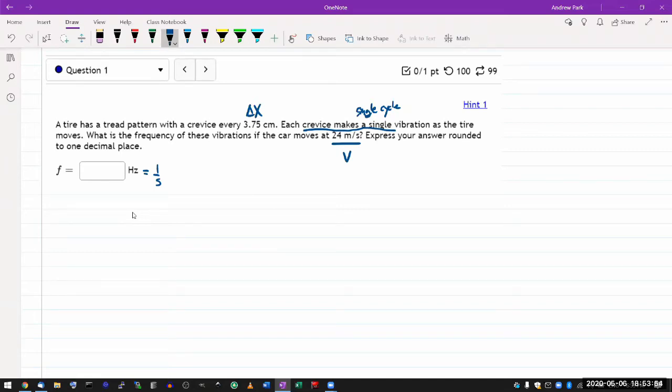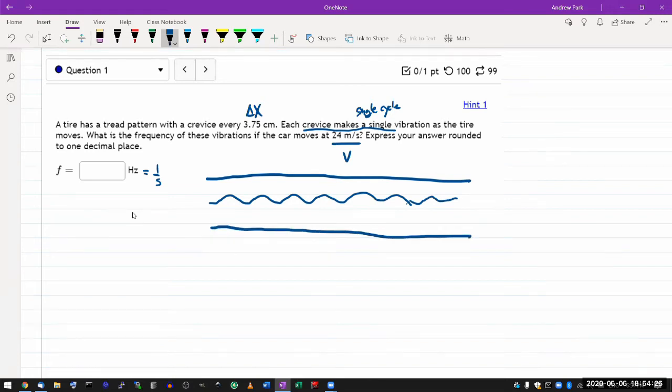The way I might draw the picture of this is draw the picture of the tread pattern, kind of imagining the car driving over a clay road so that it's making an impression of its tread pattern as it's moving. So let me just draw something that looks like a tread pattern. Something like that. The question has given you is it has a tread pattern with a crevice every some length. Within this drawing, there would be this length here. It's the amount of distance over which this pattern repeats. And this also happens to correspond to a single cycle.